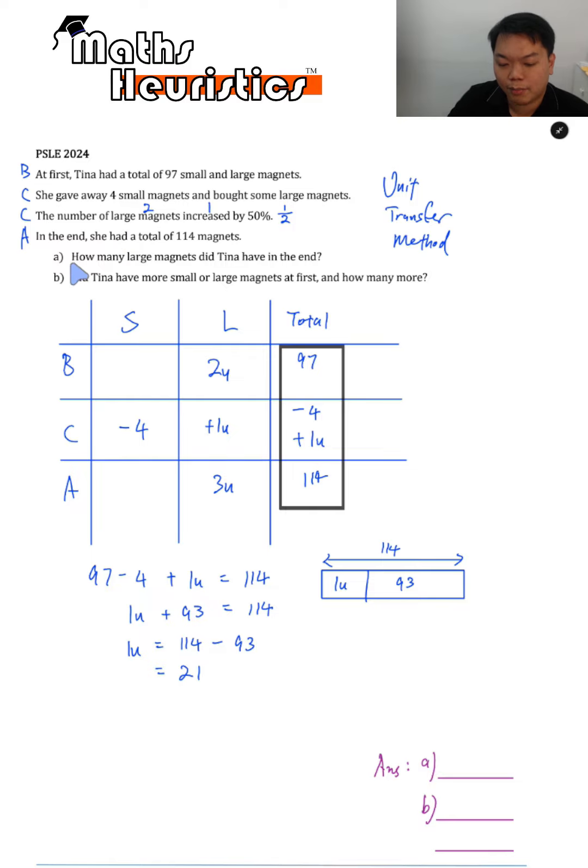So to answer part A, how many large magnets did Tina have in the end? This is what you need to find. Okay, so part A is three units worth. Three times 21 will give you 63. Okay, that's the answer for part A.